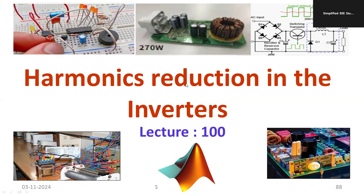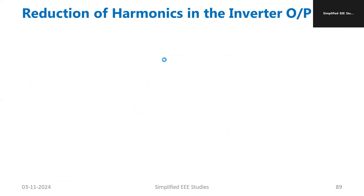We already discussed about the salient features of inverters and types of inverters and different types of PWM techniques. Now we are moving on to how to minimize harmonics reduction in the case of inverters.